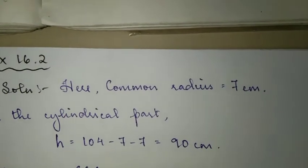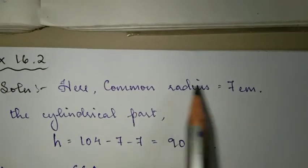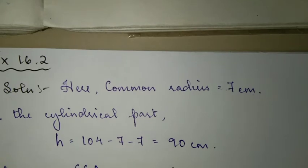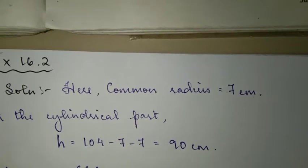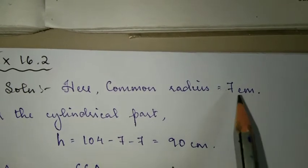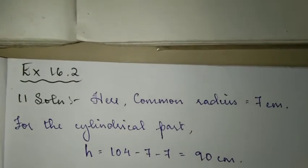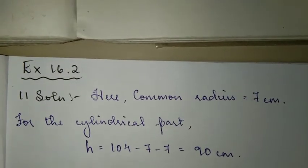Now let's write down what is given to us. Here, the common radius is 7 centimeters. The hemisphere and cylinder have a common radius.